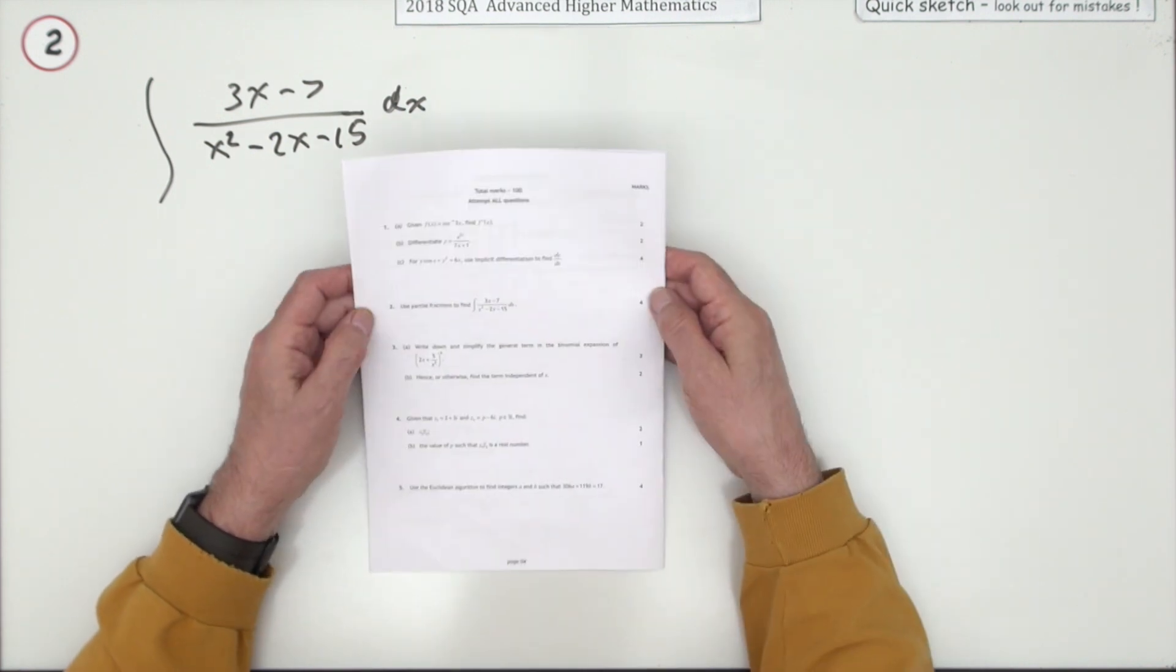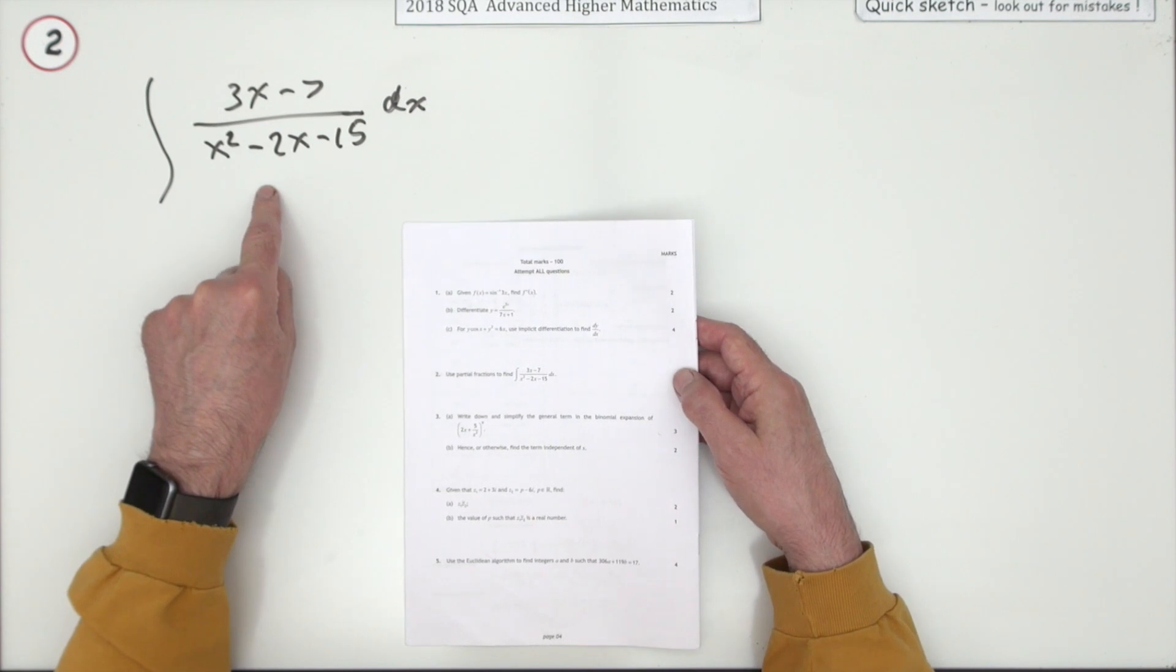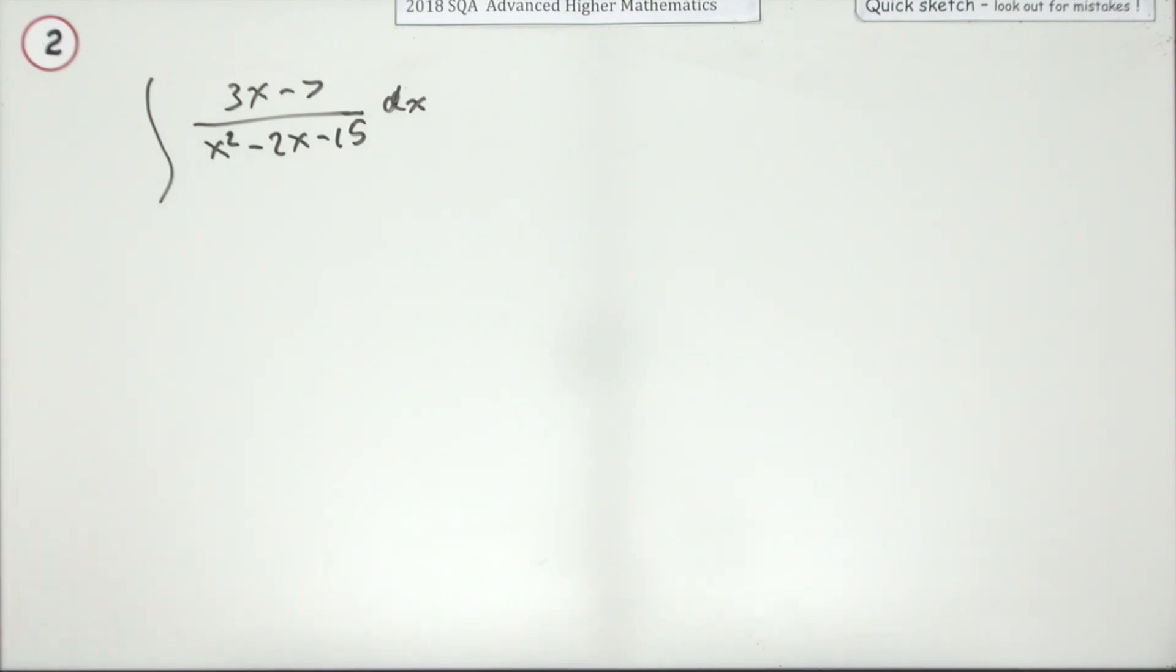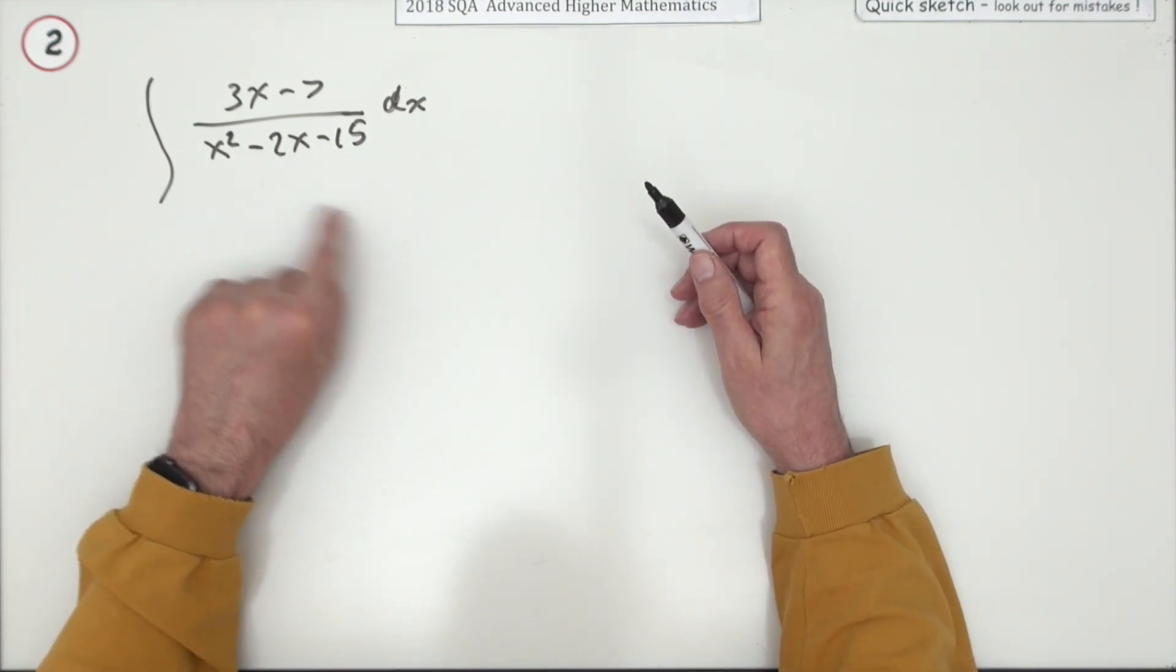Number two from the 2018 Advanced Math exam: carry out this integration. It's telling you which way to proceed - it says use partial fractions. Well, partial fractions means splitting that up into two fractions with linear denominators.